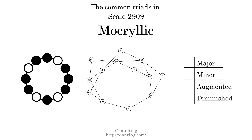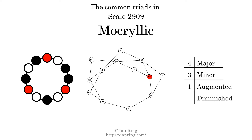Here are the common triads present in this scale. The diagram in the center is a graph of parsimonious voice leading between triads. There are four major triads. There are three minor triads. There is one augmented triad. There are five diminished triads. Here is a Hamiltonian path of parsimonious voice leading that uses all the triads.